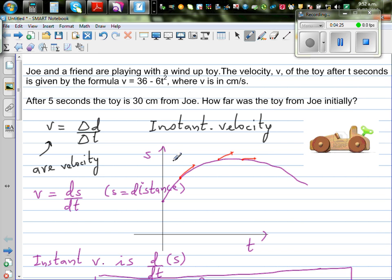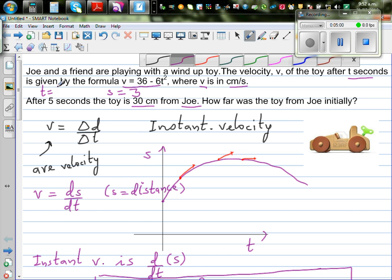So let's read the question now. Joey and a friend are playing with a wind-up toy. This is a wind-up toy. The velocity V of the toy after T seconds is given by this formula. This is your velocity with respect to time, where V is centimeters per seconds. After 5 seconds, that means when T is 5, the toy is 30 centimeters away from Joey.